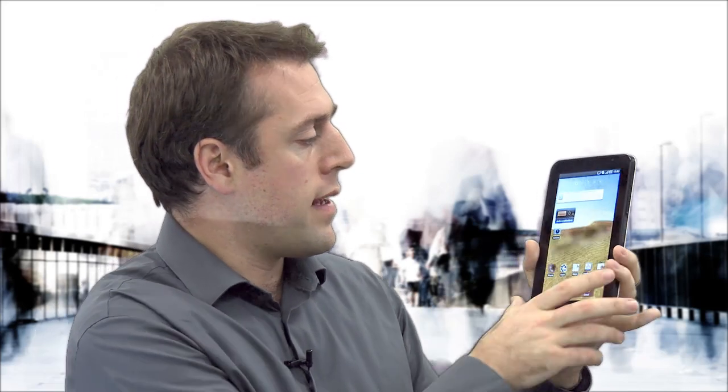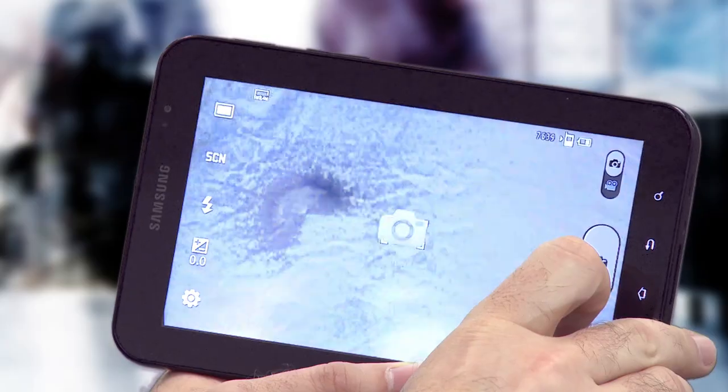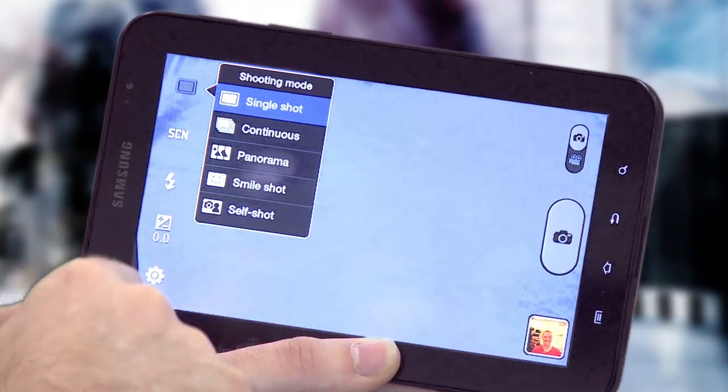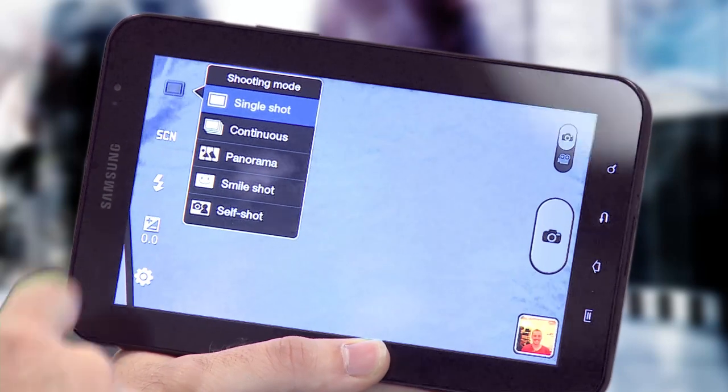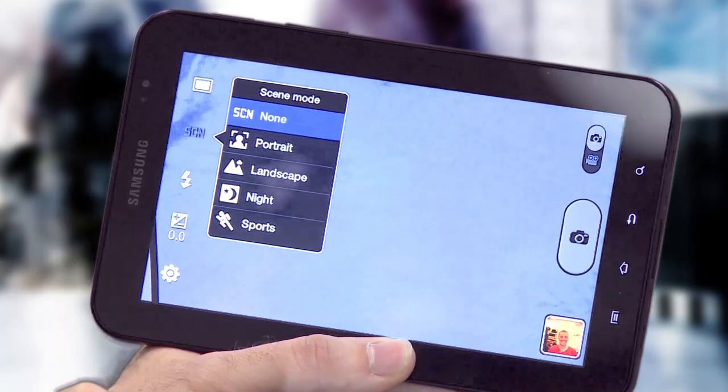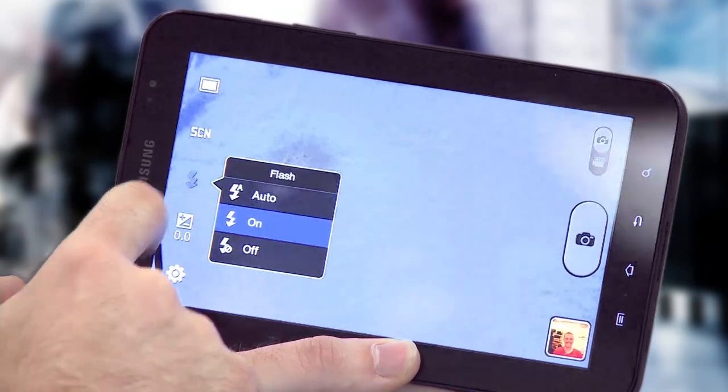Now onto the videos and photos that you can take with the device itself. If we launch the camera application, there are a number of scene modes, including portrait, landscape, night, and sports. You've got your Flash options, automatic, on or off. You've got exposure compensation.